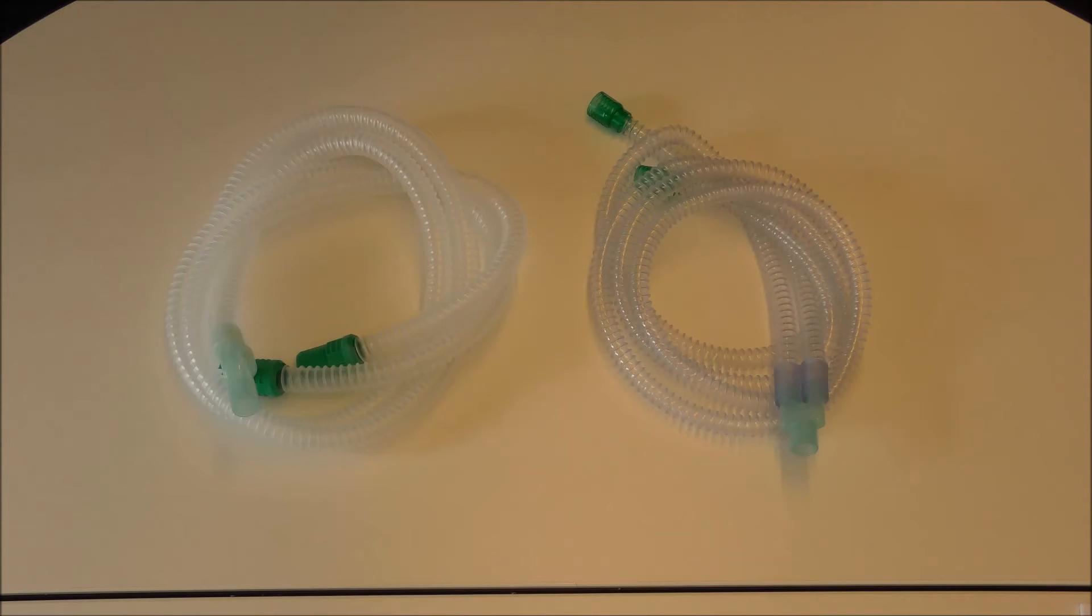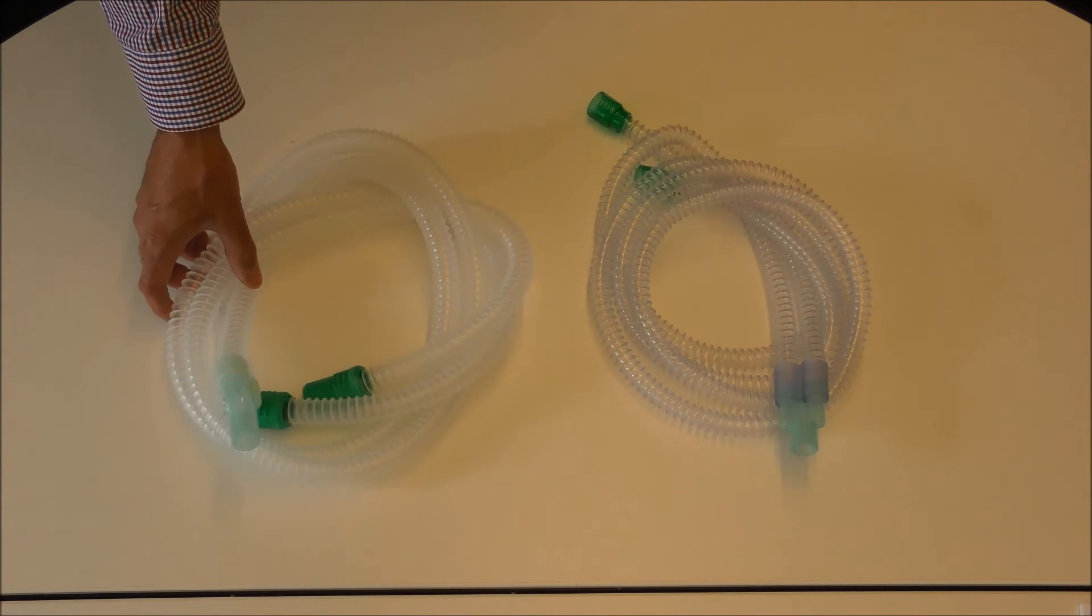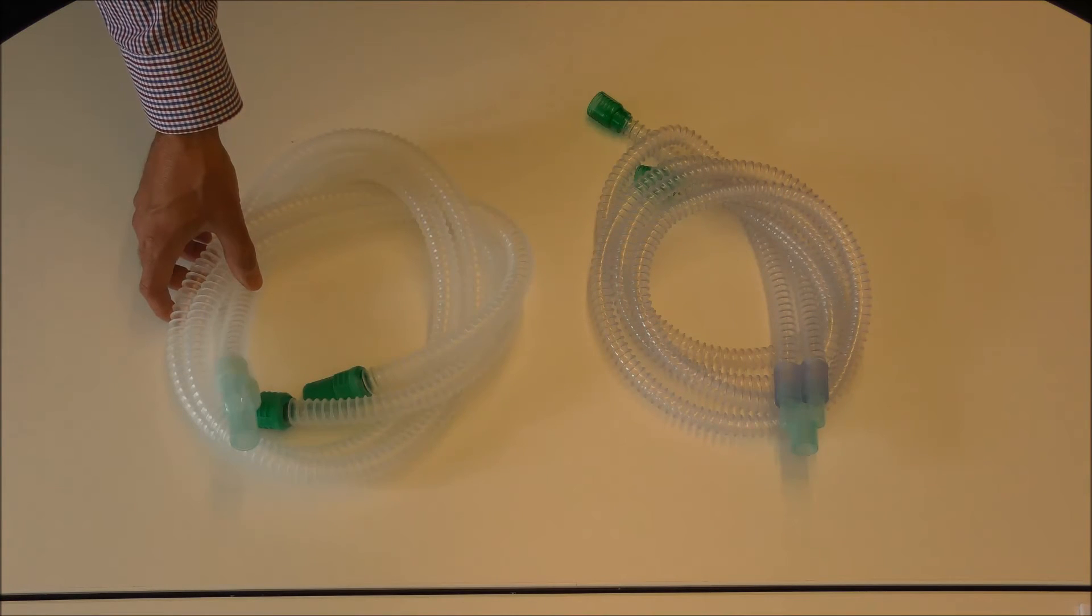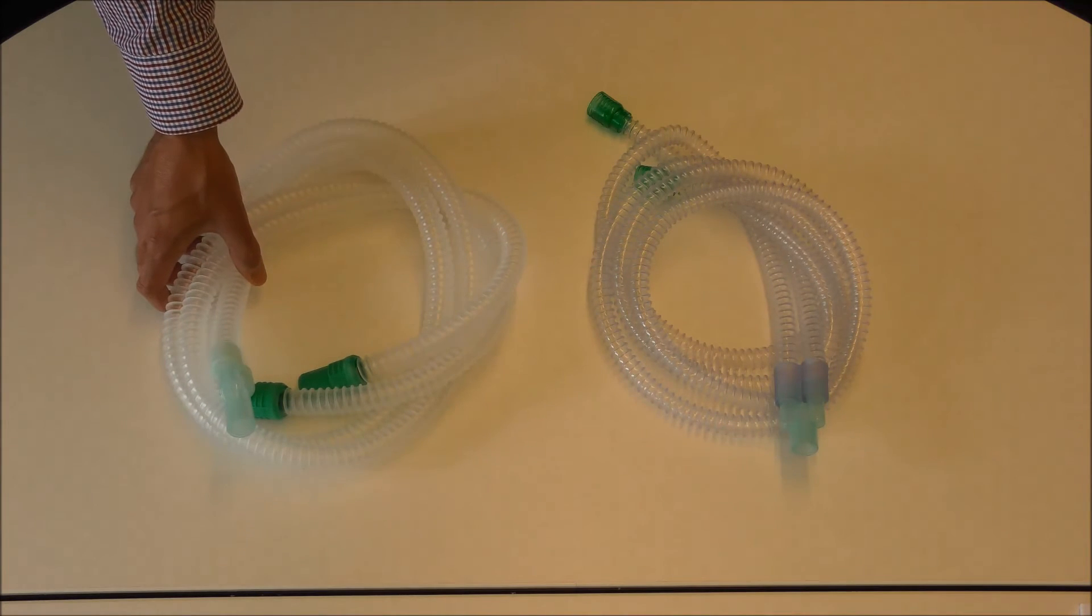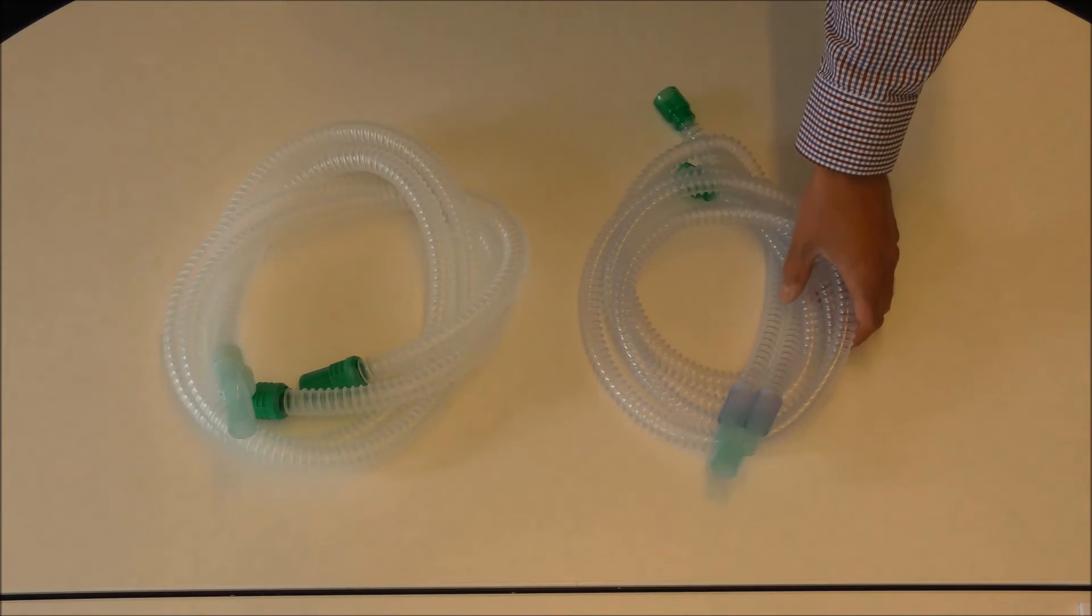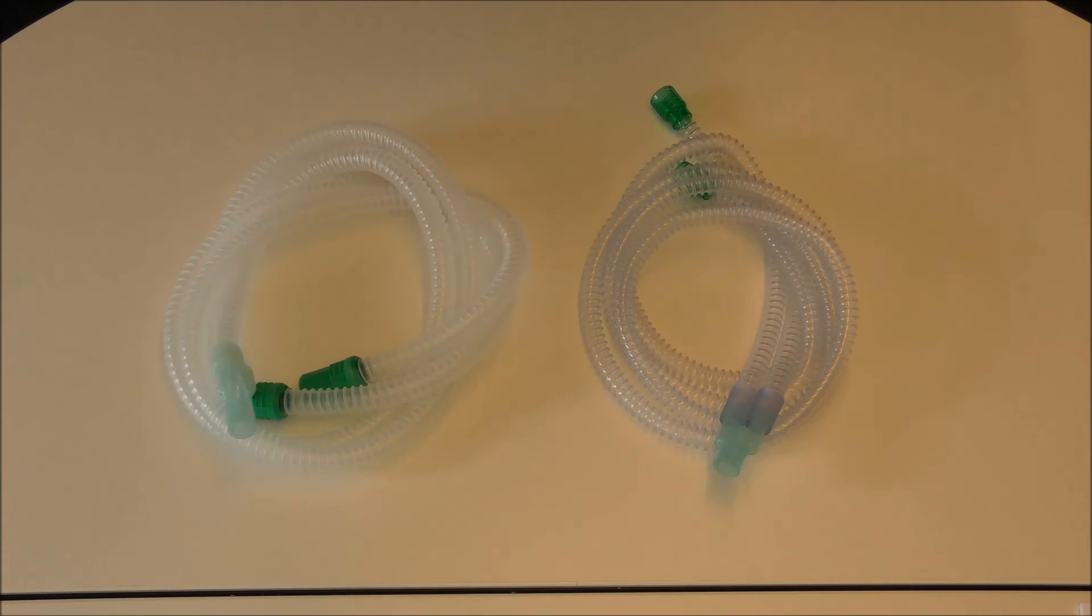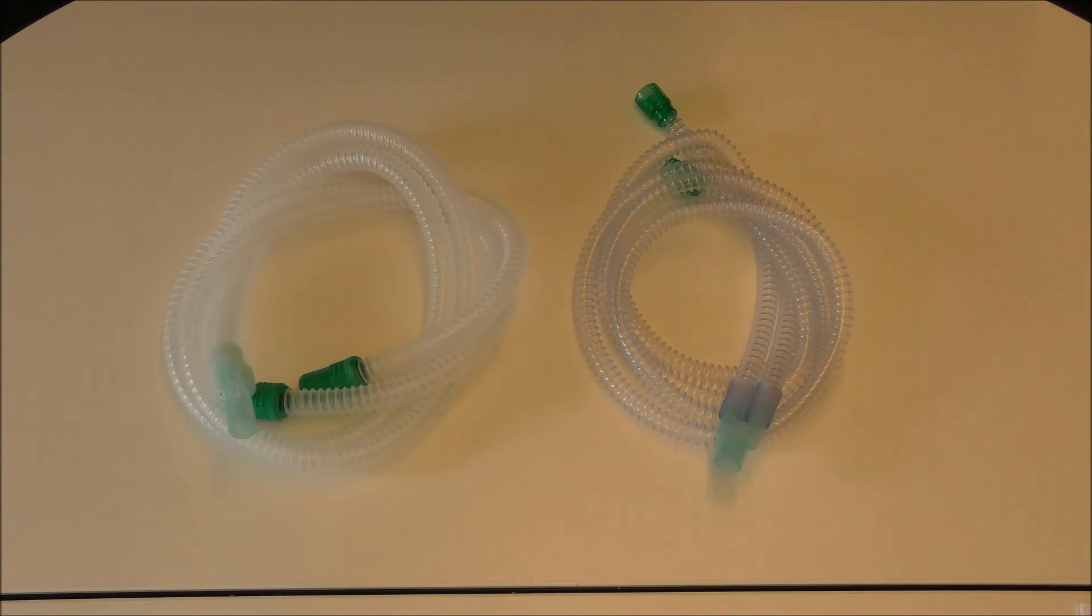These are the dual limb circuits for use with the Vivo60 ventilator. The adult circuit with the 22mm diameter with the part number 005520 and the pediatric version with part number 005519, the 15mm circuit. Both circuits are disposable.